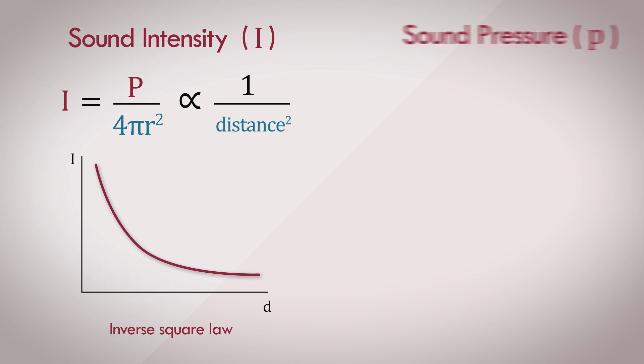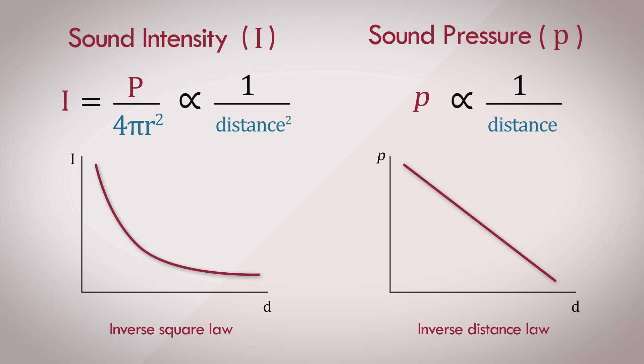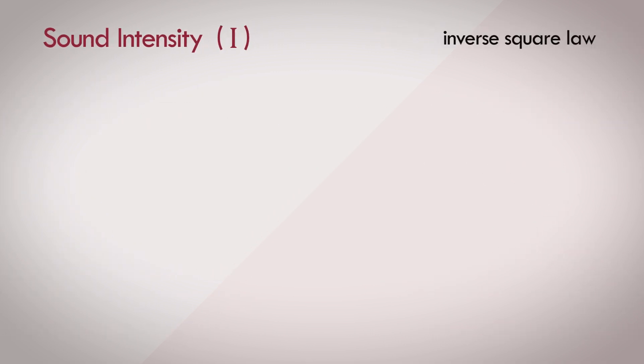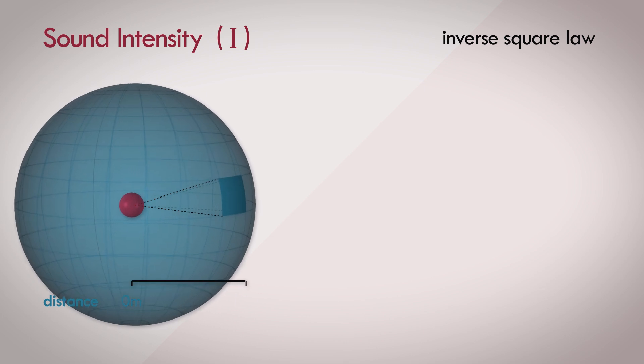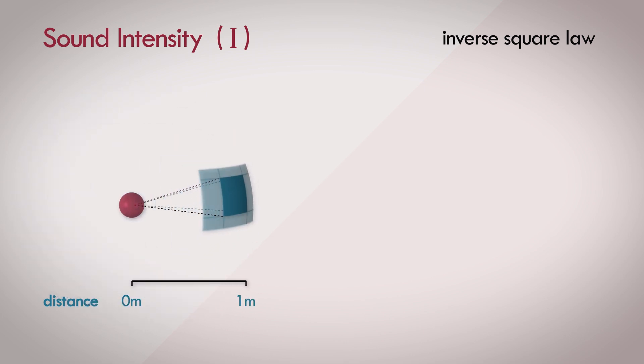Contrast that to sound pressure, the pressure drops linearly the further away you are from the source. We can visualize why intensity drops exponentially. Let's say we calculate the sound intensity at a meter away from the source, at a certain cross-sectional area of space. The sound intensity here represents the energy of the sound flowing through this patch.